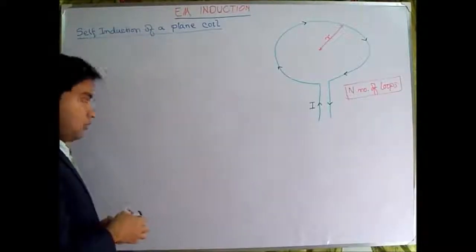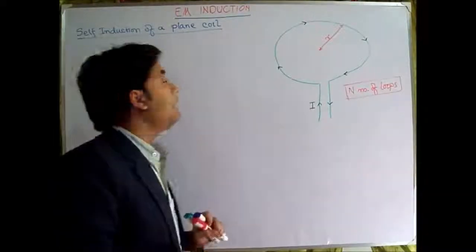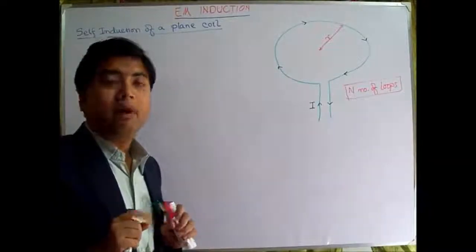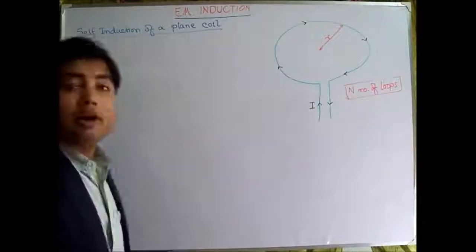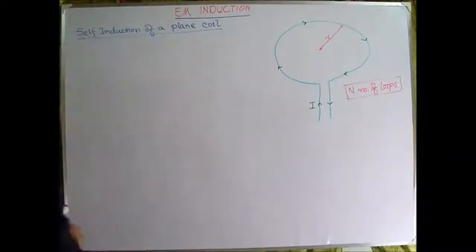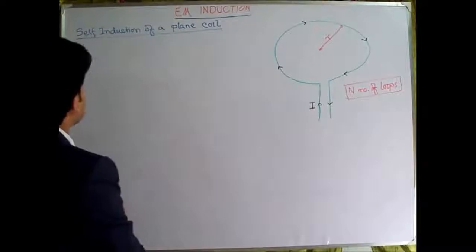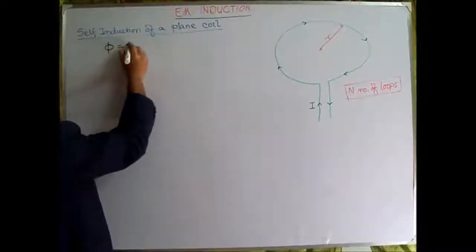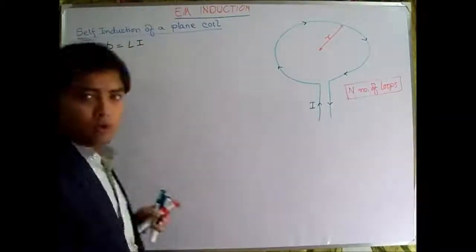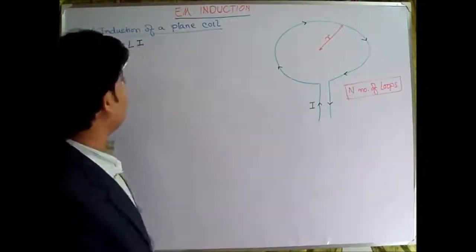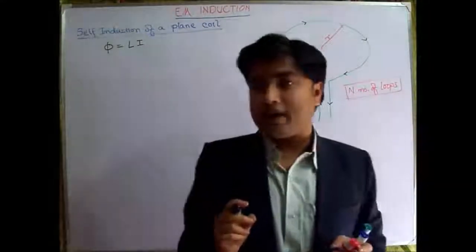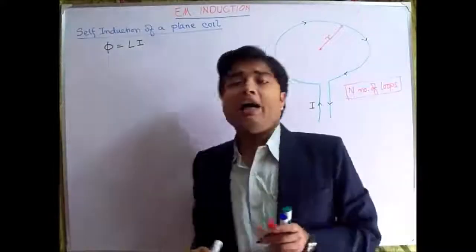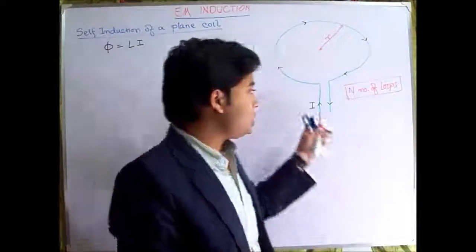So we are going to find out the self-inductance of a plane coil by applying the formulas of self-induction. Now, from self-induction we have seen that φ = LI, where φ is the magnetic flux, L is the self-inductance with SI unit of Henry, and I is the current which is flowing.